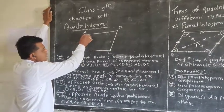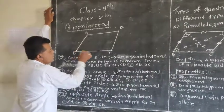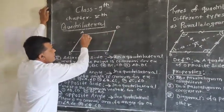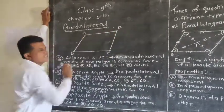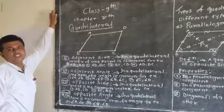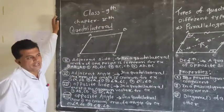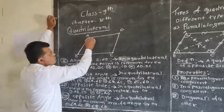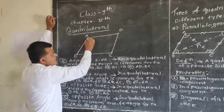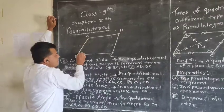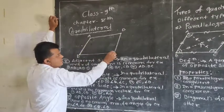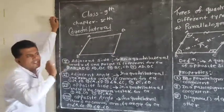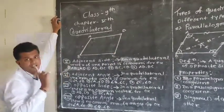From the last session: AB, BC, CD, and AD are the sides of the quadrilateral. We also need to know angle A, angle B, angle C, and angle D — these are the angles of the quadrilateral.